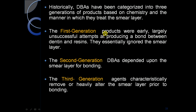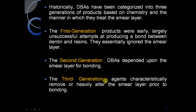Historically, dentine bonding agents have been categorized into three generations based on chemistry and the manner in which they treat the smear layer. The first generation products were largely unsuccessful attempts at producing a bond between dentine and resin — they essentially ignored the smear layer. The second generation depended upon the smear layer for bonding, but the third generation removed the smear layer.